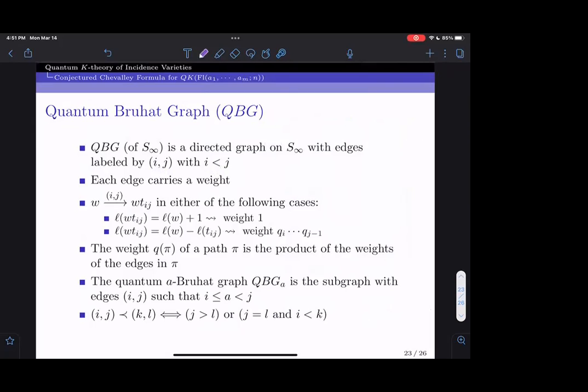What are quantum Bruhat graphs or quantum a-Bruhat graphs? A quantum Bruhat graph is a directed graph on the symmetric group with edges labeled by pairs (i,j) such that i is smaller than j. Each such pair corresponds to a transposition T_{i,j} which swaps i and j. Each edge in the quantum Bruhat graph carries a weight. There is an edge between two permutations if they differ by a transposition T_{i,j}, and either their lengths differ by one or their lengths differ by the length of the transposition. In the first case, the edge points towards the longer permutation and carries weight one. In the second case, the edge points towards the shorter permutation and carries weight this product of q variables.